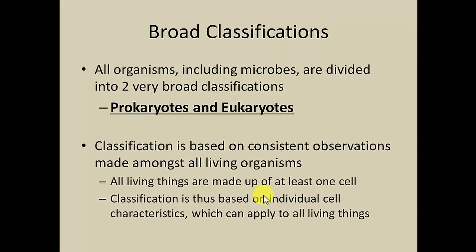Regardless of whether you have one cell or a hundred trillion cells, when we look at life, we can identify all living organisms in one of two categories based on the nature of their cells. All living organisms can be broken into two categories called prokaryotes and eukaryotes, which are categories that indicate their cell characteristics.